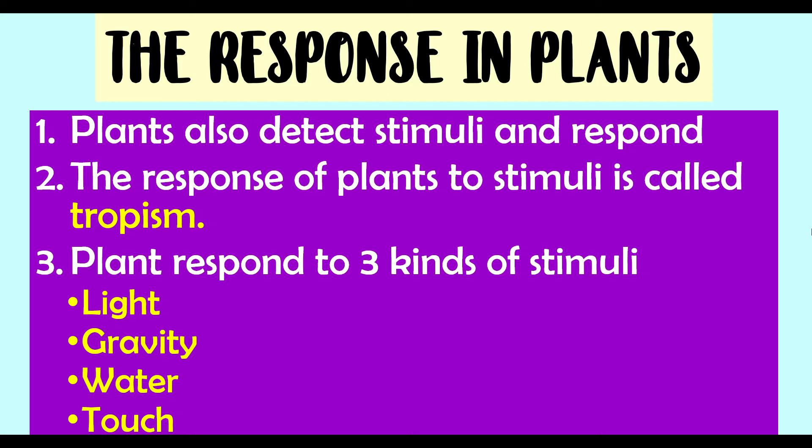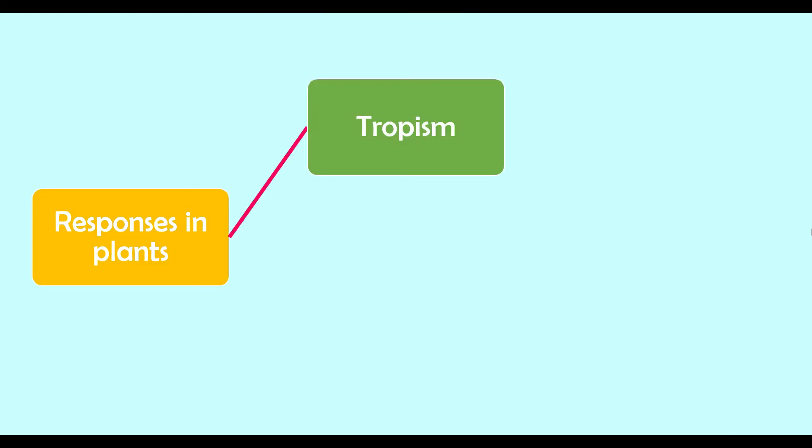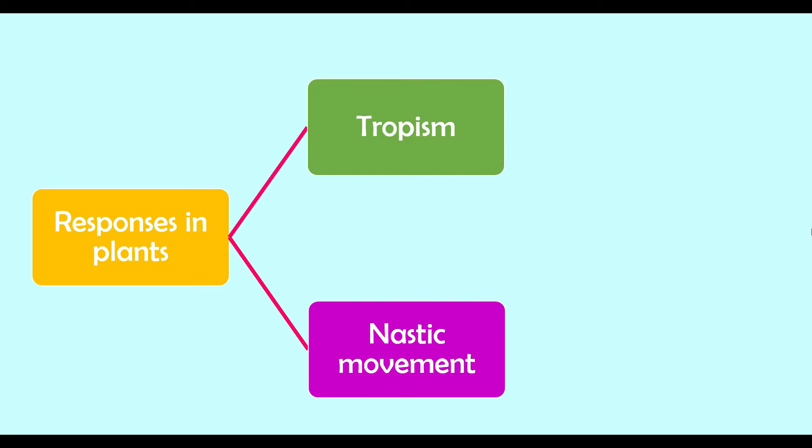Plants respond to four main kinds of stimuli: light, gravity, water, and touch. Some plants also show responses to stimuli such as temperature and chemicals. There are two types of responses: tropisms and nastic movements.